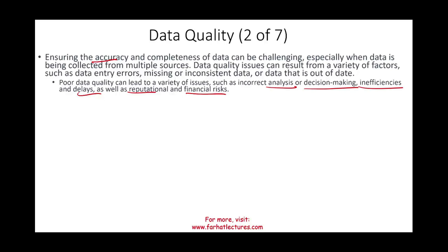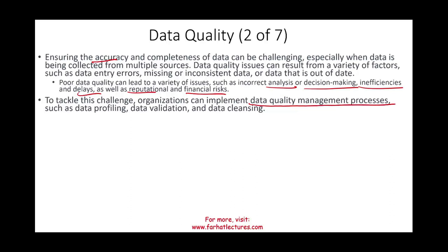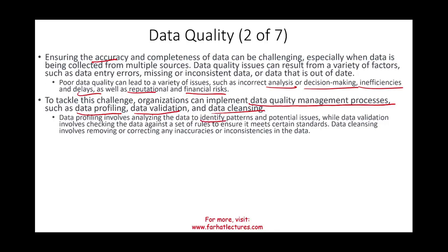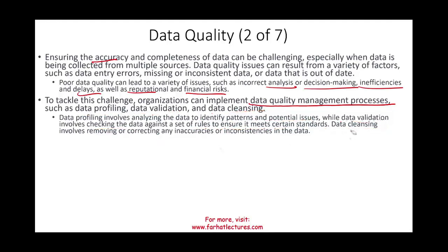To mitigate data quality challenges, companies can implement a data quality management process — for example, data profiling, data validation, and data cleansing. Data profiling involves analyzing the data to identify patterns and potential issues. Data validation involves checking the data against a set of rules to ensure it meets certain standards. Data cleansing means removing or correcting any inaccuracies or inconsistencies in the data — ensuring it is complete and removing data that doesn't make sense.